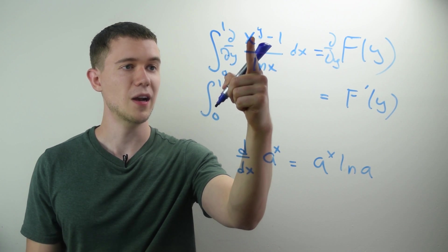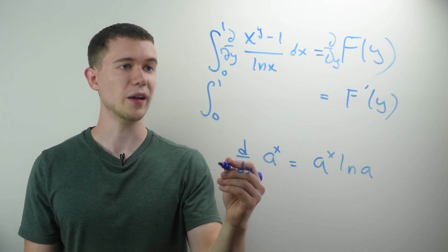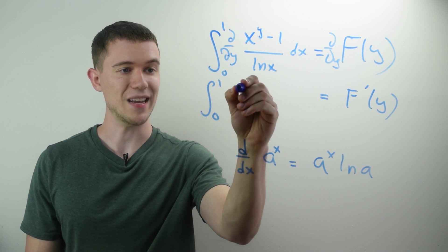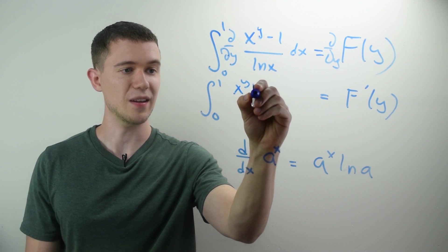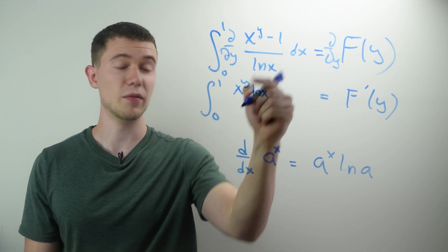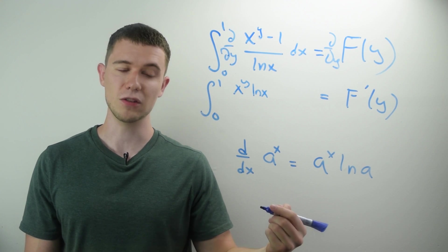So what's the derivative here? The derivative of x to the y, with respect to y, is x to the y natural log x. The derivative of 1 is 0, because 1 is still a constant.